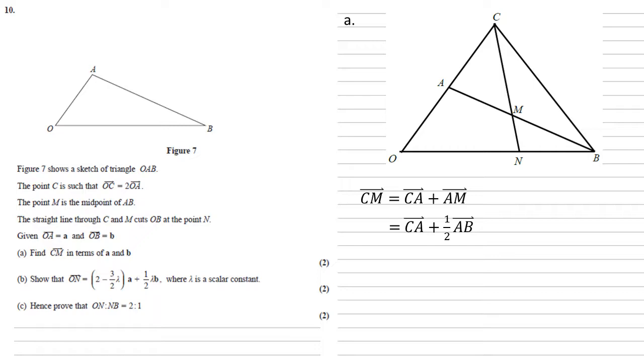CA plus AM must be the same as CA plus half AB. Now changing this into our vectors. CA is the same as AO. We know this because they're in a straight line and A is the midpoint. Well AO is just OA backwards. So CA must be minus A.